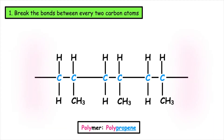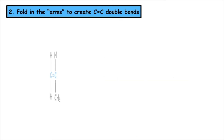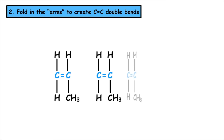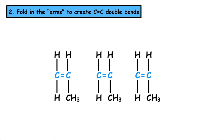Step number one: we want to break the bonds between every two carbon atoms. We then fold in the arms to create the carbon-to-carbon double bonds. This should create three monomer units.